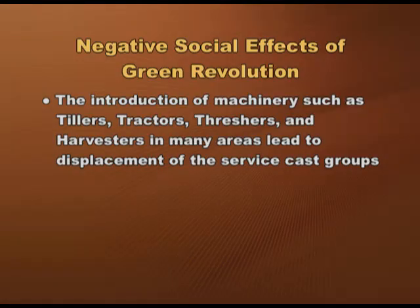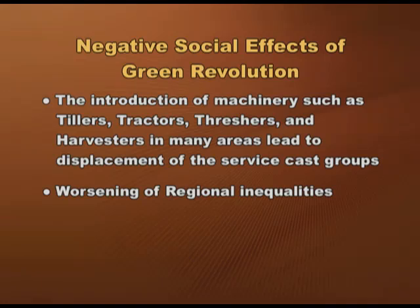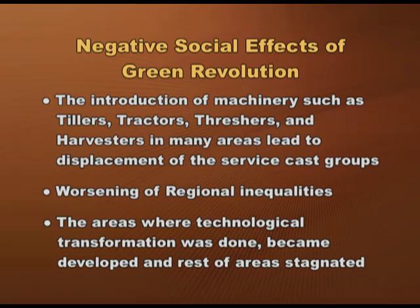Another negative impact of the green revolution was the worsening of regional inequalities. Areas where technological transformation was done became developed while the rest stagnated. The green revolution was promoted more in Punjab, Haryana, Western UP, and southern parts of the country than in the eastern parts. Agriculture remained relatively less developed in states like Bihar, Eastern UP, and dry regions of Telangana. These regions continued to have an entrenched feudal agrarian structure in which dominant castes and landlords maintained power over small cultivators and landless workers. Sharp caste and class inequalities along with exploitative labor relations are leading to discontent and violence in these regions.